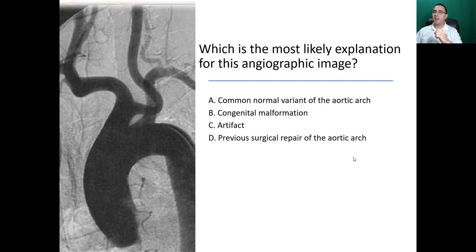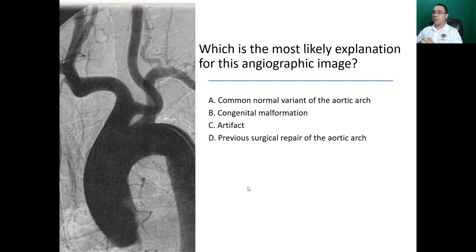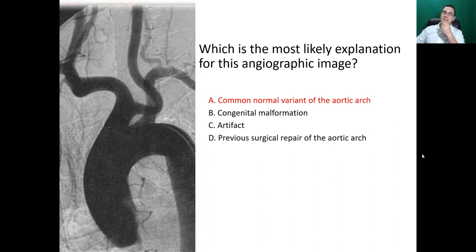Next question: which is the most likely explanation for this angiographic image? We're looking at the aortic arch and the brachiocephalic trunk — there's something not frequently seen in the most common anatomy. The options are: common normal variant of the aortic arch, congenital malformation, artifact, or previous surgical repair. The answer is A — this is a common normal variant of the aortic arch known as a bovine arch.